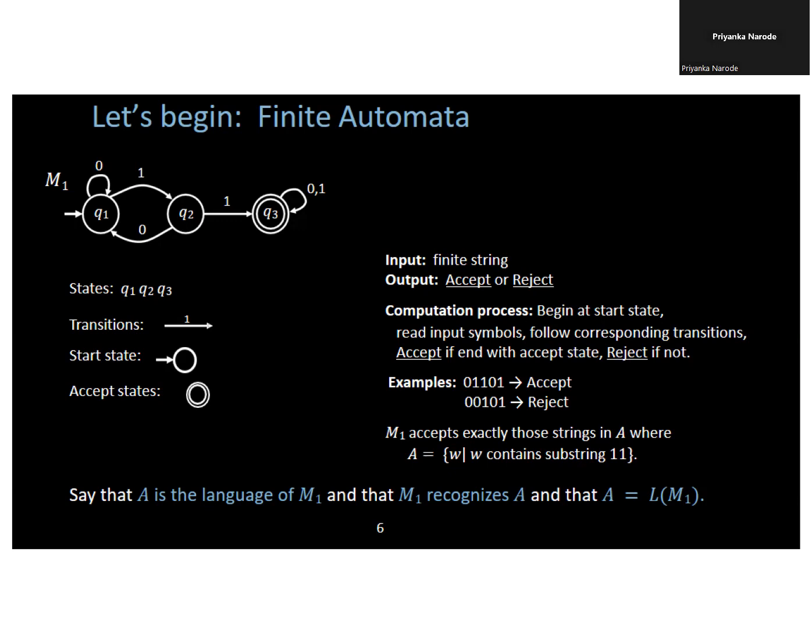There are three states: q1, q2, and q3. The transitions show that this is a finite automata diagram. The initial state is q1 and q3 is a final state.